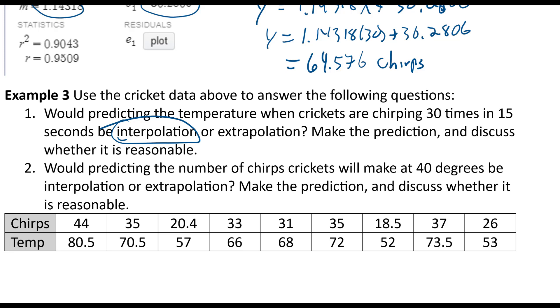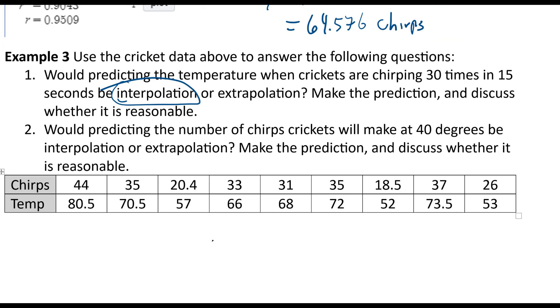Would predicting the number of chirps crickets will make at 40 degrees be interpolation or extrapolation. Well, so 40 degrees. Temperature here is 40. 40 is below anything here. So it's not clear whether or not they're still going to chirp at that temperature. That might be too cold for them.